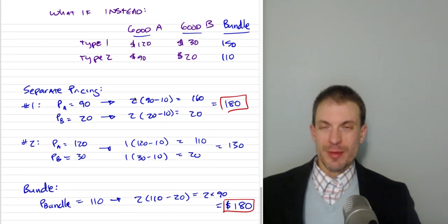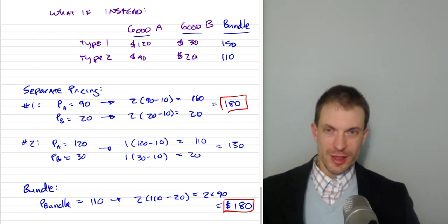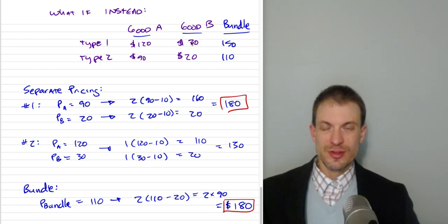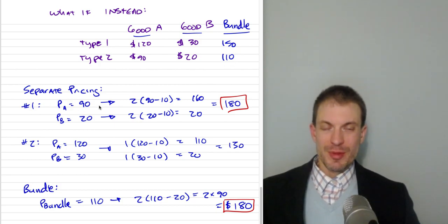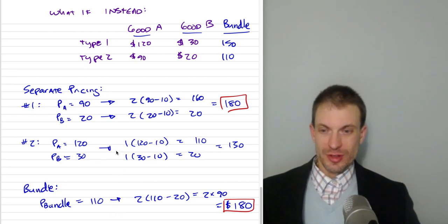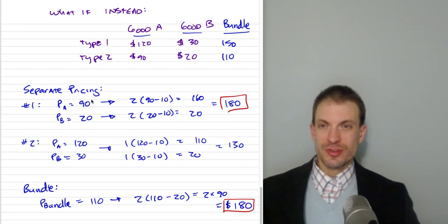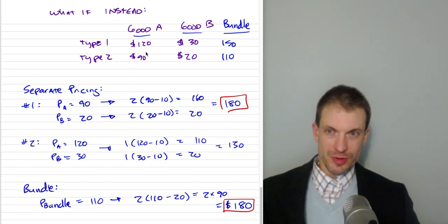Now the other example: suppose consumer of type 1 always has the maximal willingness to pay. I've flipped the type 2 and type 1 willingness to pay for good B. Type 1 now has the highest willingness to pay in both cases. This affects the bundle prices: type 1 consumer would pay a max of $150 for the bundle, and type 2 would pay a max of $110. For separate pricing, it's the same as before — set good A at $90, good B at $20, both consumers buy, and profits are $180.